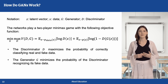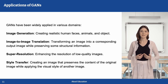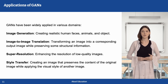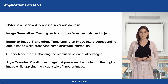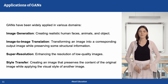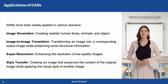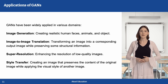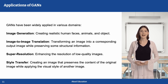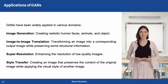GANs have diverse applications in multiple industries, including image generation — creating synthetic images that look real; image-to-image translation — transforming an image into a corresponding output while preserving structural information; super-resolution — enhancing the resolution of low-quality images; and style transfer — creating an image that preserves the content of the original while applying the visual style of another. These applications showcase how GANs are shaping the future of AI-powered content creation.